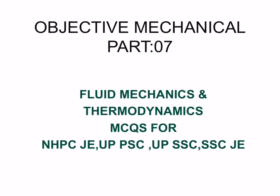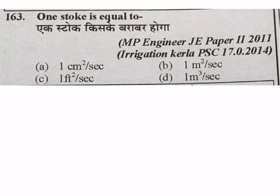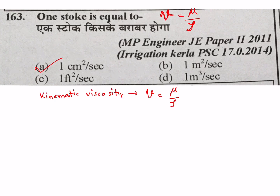Question: one stoke is equal to? Stoke is the unit of kinematic viscosity. Kinematic viscosity equals dynamic viscosity (coefficient of dynamic viscosity) divided by density rho. One stoke equals one centimeter square per second — A is your correct answer.